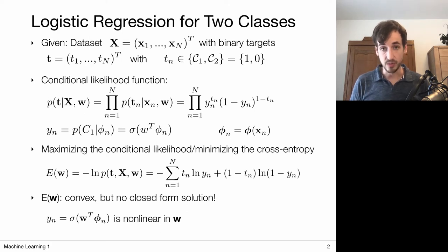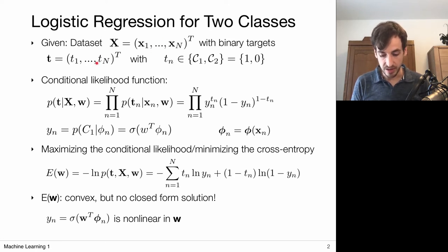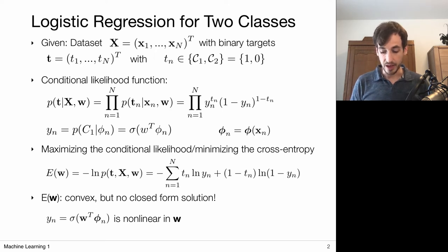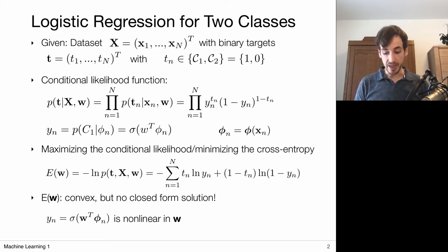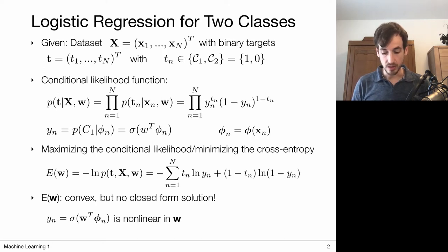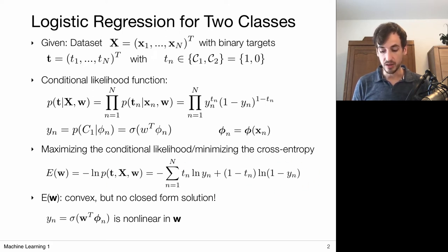We have this probabilistic model for the posterior class probabilities, and that allows us to define the overall joint likelihood function for my entire dataset — the likelihood that this entire dataset was modeled via such a model for the posterior class probabilities, parametrized by a set of parameters w. The notation here is that phi_n is the feature vector associated with the n-th data point. The popular strategy for obtaining optimal parameters w is maximizing the log likelihood, and the negative log likelihood in this case is given by the cross-entropy loss.